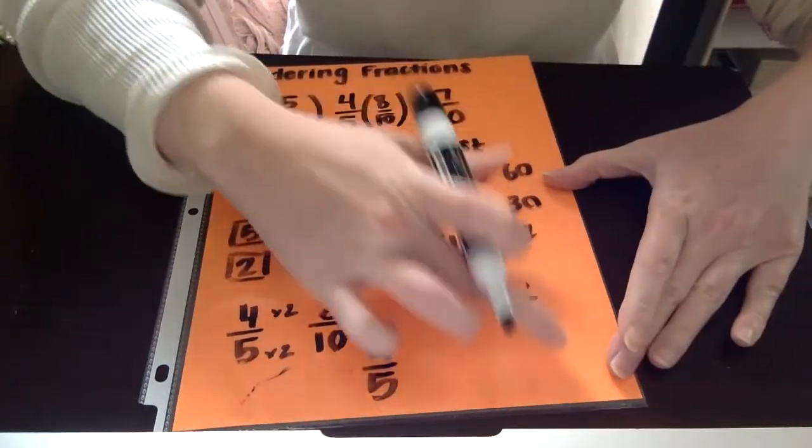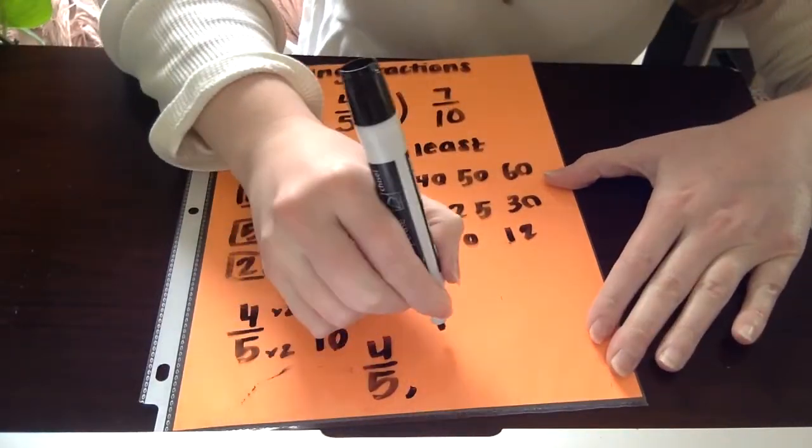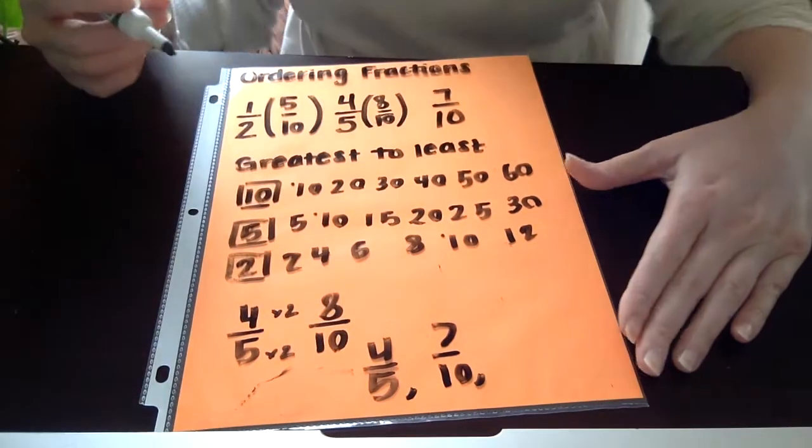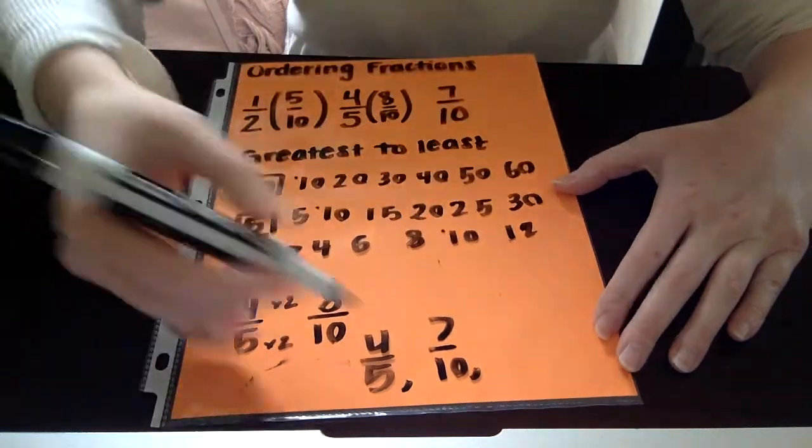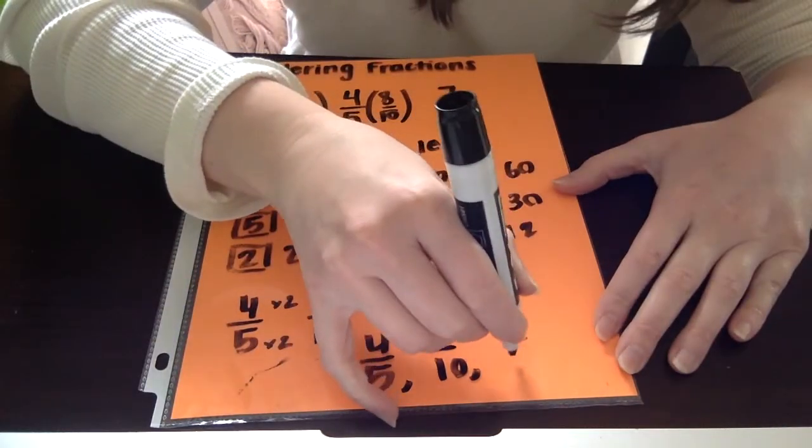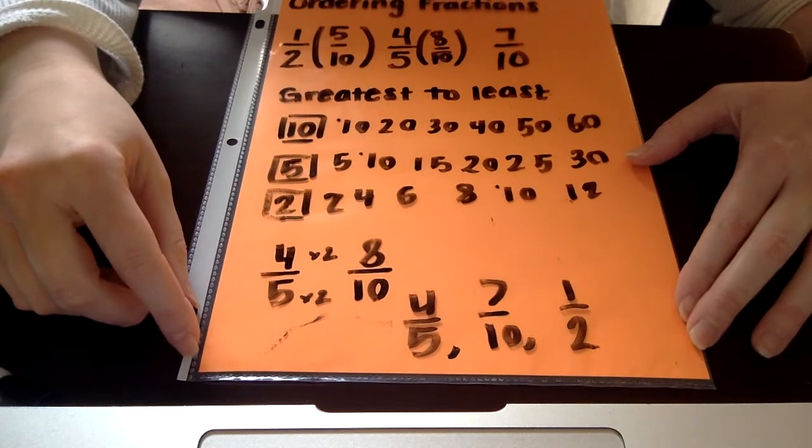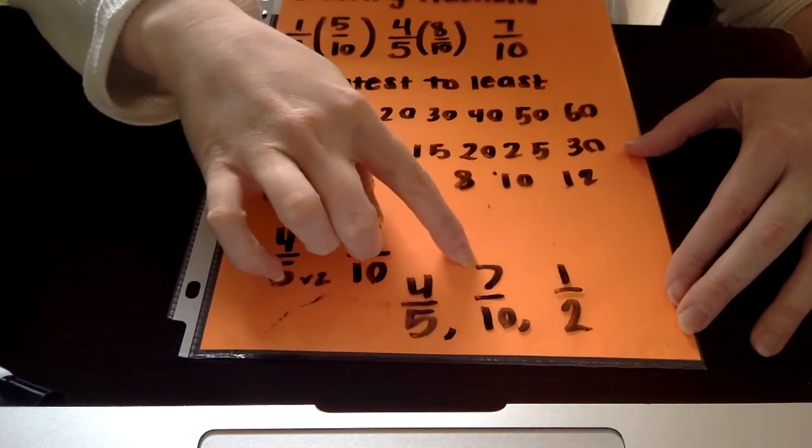Go ahead and erase this over here so I can write it 7 tenths. And then last but not least, I have 5 tenths. My original fraction was 1 half, so I'm going to write my original fraction down there. So in order from greatest to least, I have 4 fifths, 7 tenths, and 1 half.